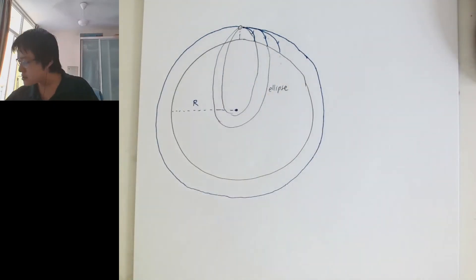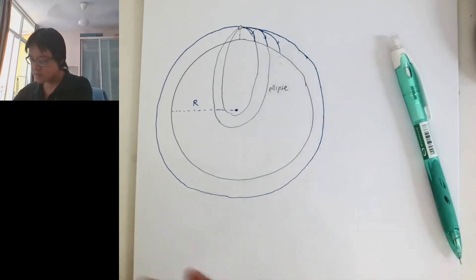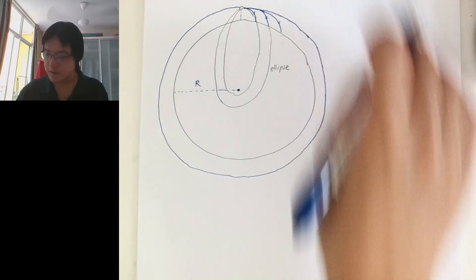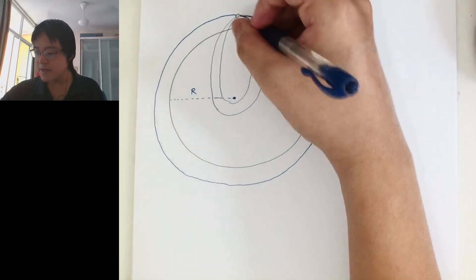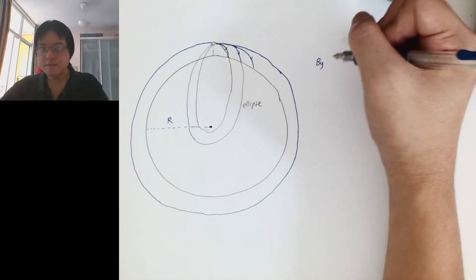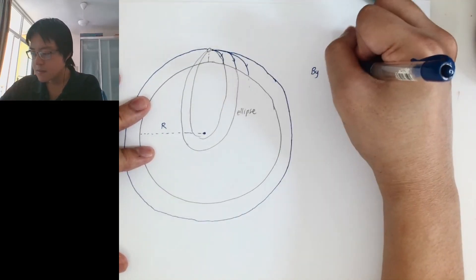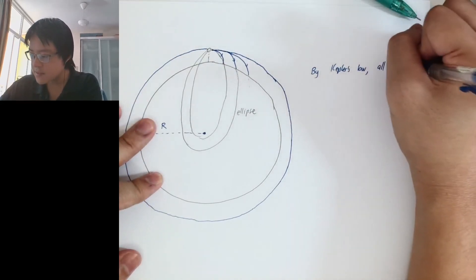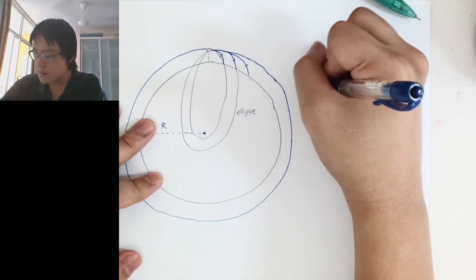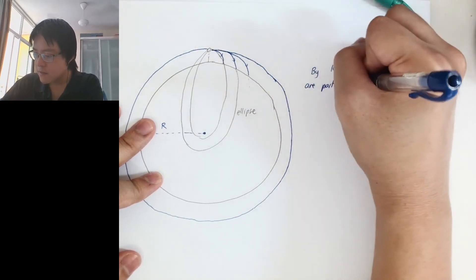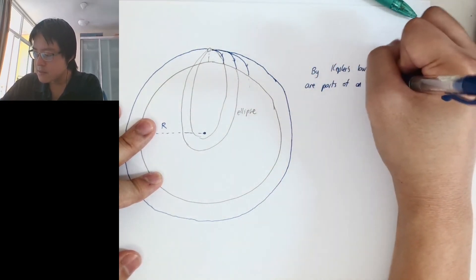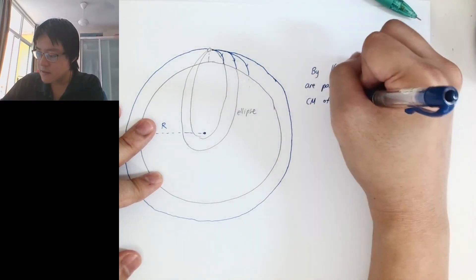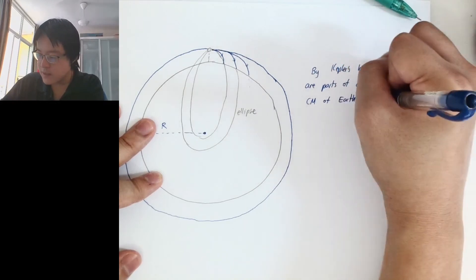So this is how the projectile motion works — this is page five. By Kepler's law, all cases are parts of an ellipse, and the center of mass of the Earth is one of the foci. This is the center of mass of the Earth. As usual, once we calculate the center of mass, we can just treat everything at the center of mass and ignore the size of the Earth.